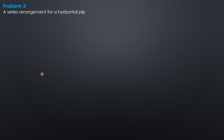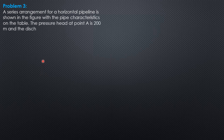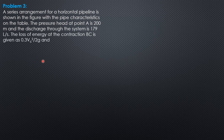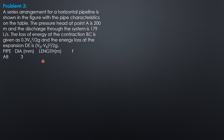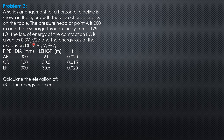Example 3. A series arrangement for a horizontal pipeline is shown in the figure with the pipe characteristics on the table. The pressure head at point A is 200 meters and the discharge through the system is 179 liters per second. The loss of energy at the contraction BC is given as 0.3 times velocity head in pipe C, where 0.3 is the loss coefficient for contraction.